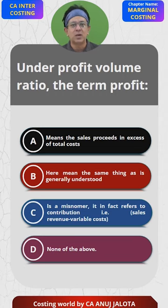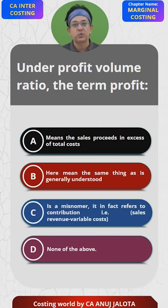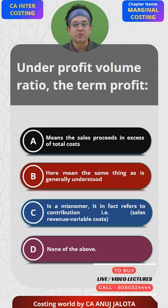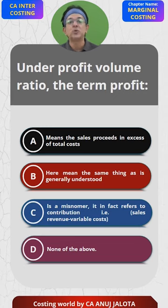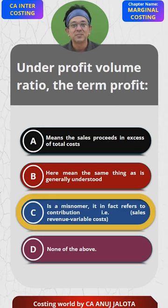Then why is it called profit volume ratio? Because whatever will be the increase in contribution, fixed cost remaining the same, will be the increase in profit also. That is why the term has become famous as profit volume ratio. Actually it should be contribution to sales ratio. So the answer is C — it is in fact a misnomer. That's the correct answer.